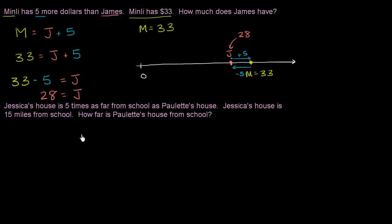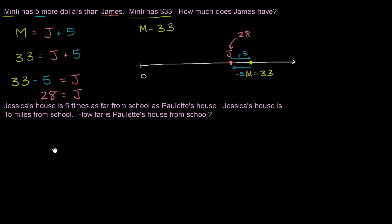Now let's think about this next question. Jessica's house is five times as far from school as Paulette's house. Jessica's house is 15 miles from school. How far is Paulette's house from the school? Let's look at each sentence and use letters to represent the distances. I encourage you to pause the video and try to figure it out on your own.